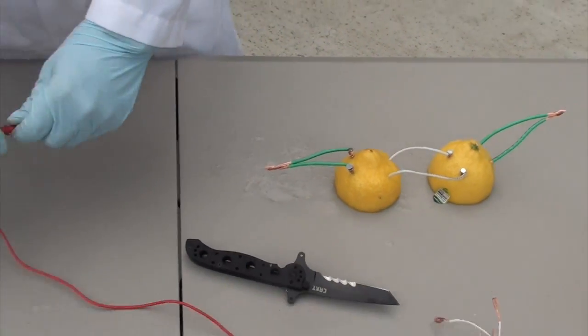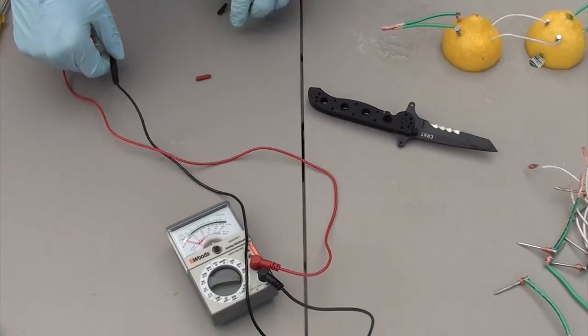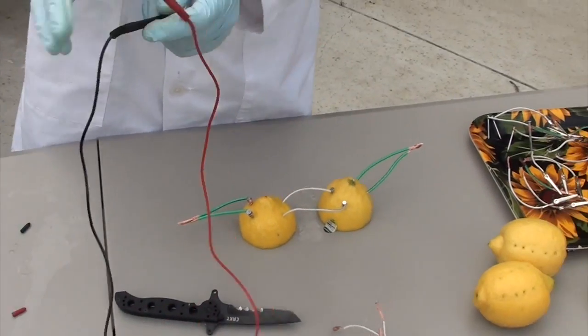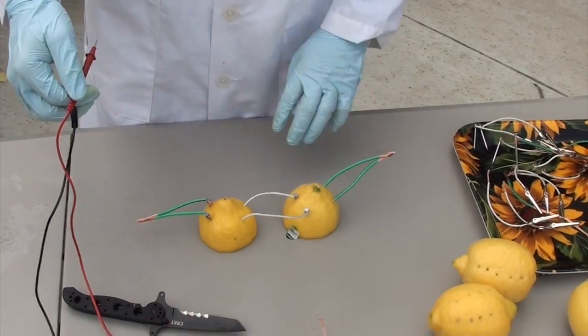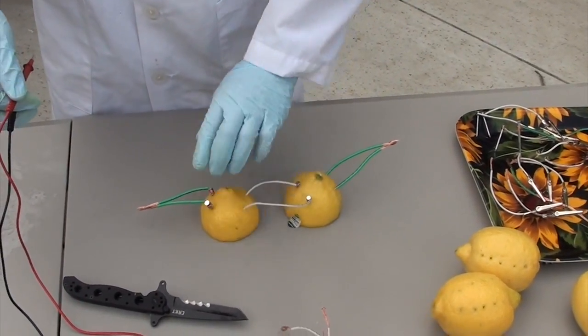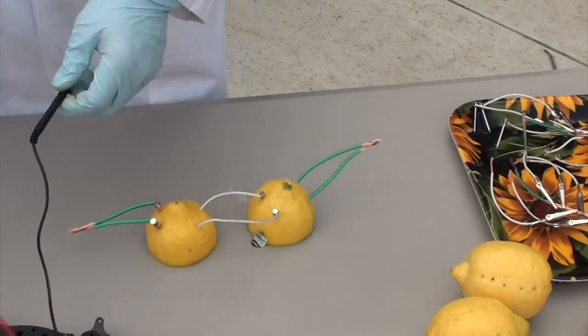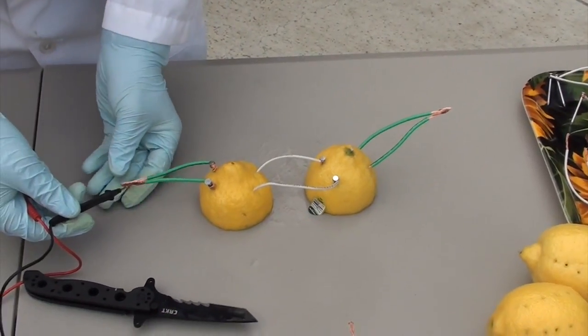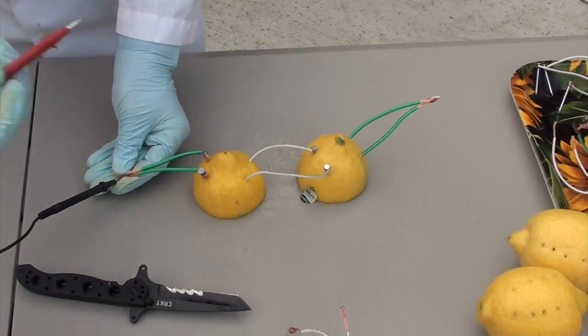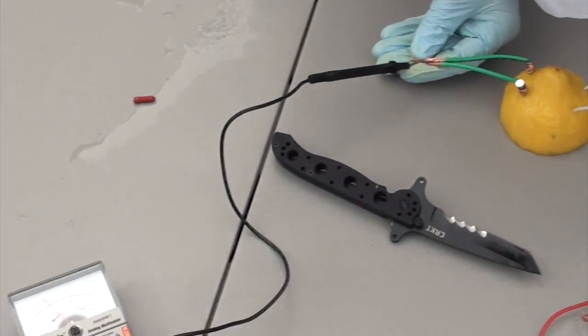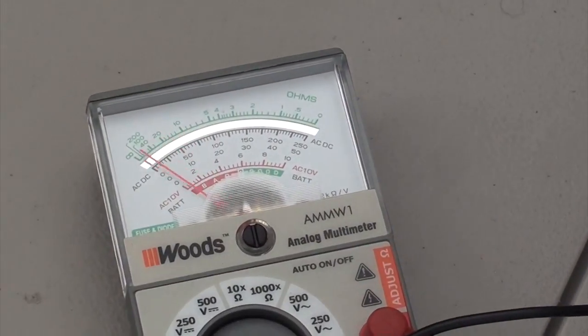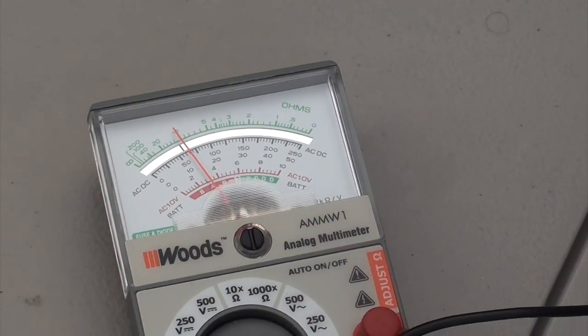So now we are going to use our voltmeter and check our charge. See if we have a current going through it. This is going to be your negative side because of the zinc nails, so you are going to put your black one to this one. And then your positive is going to go to the copper sides. And as you see, we should have a current running through the lemon, giving you a battery.